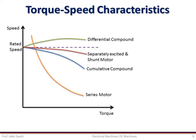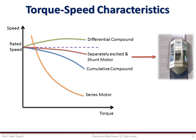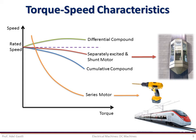In summary, we can plot all torque-speed characteristics on one figure to easily compare them. These different characteristics make different motor classes fit specific applications. The shunt or separately excited motor suits applications where speed is nearly independent of torque, such as lifts, while the series motor suits high starting-torque applications such as drills and traction.